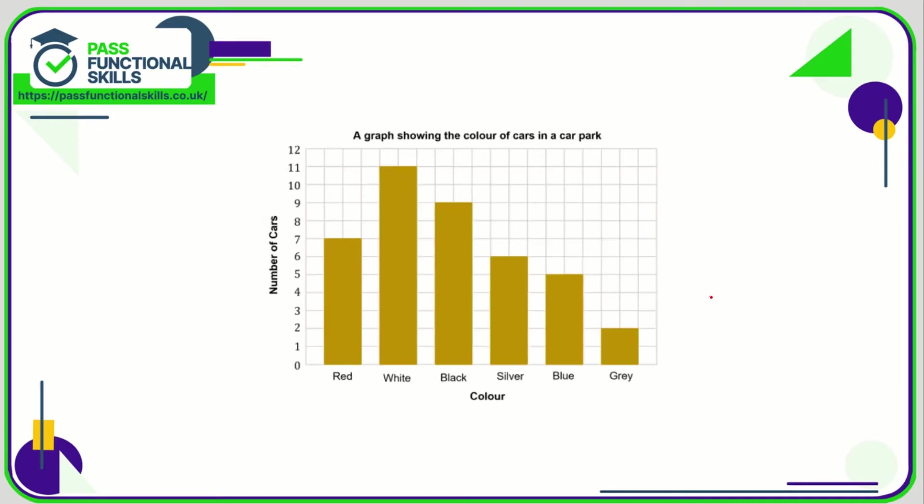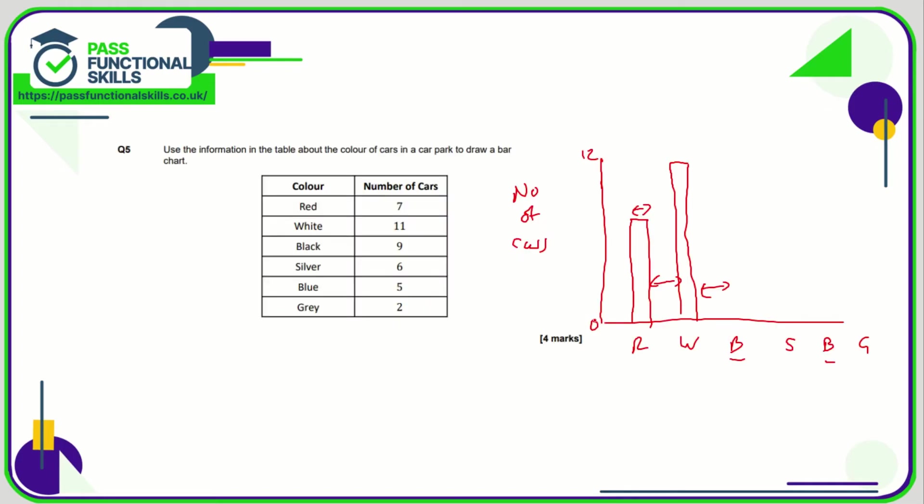The end result would look something like this. Axes clearly labeled, scale zero to twelve going up in ones. We can see the numbers correspond to the table: seven, eleven, nine, six, five, and two. There are no further questions on that one, so we are done.